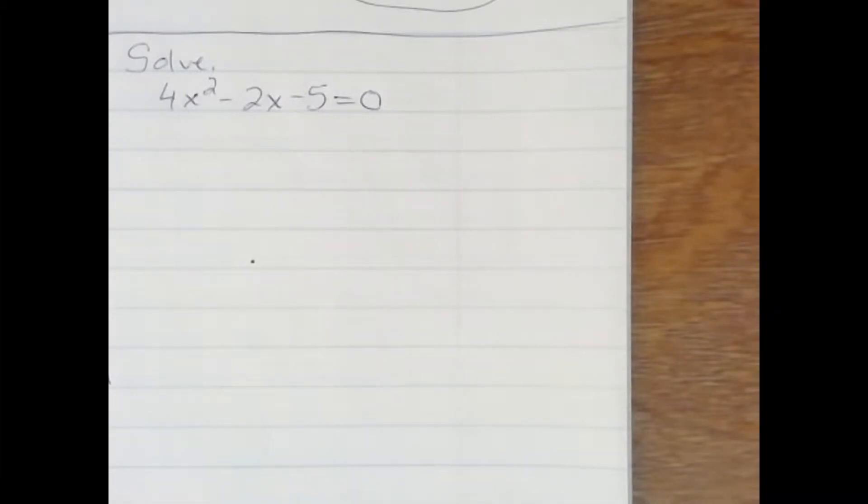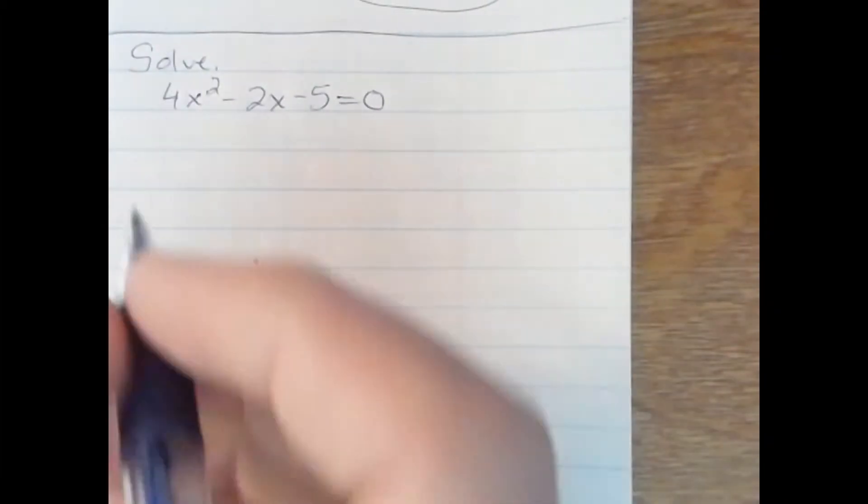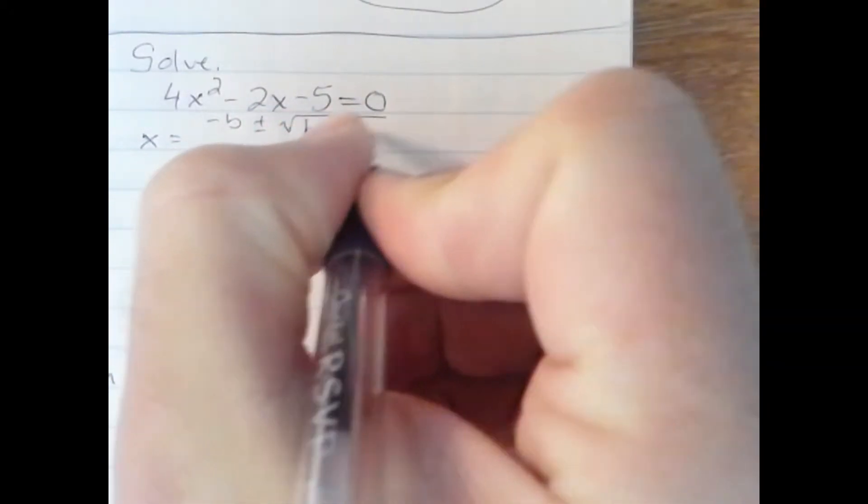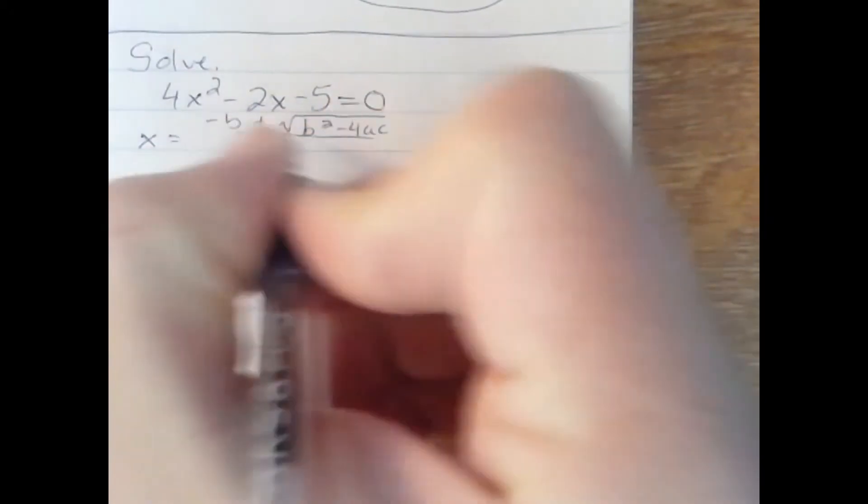Alright, we're going to solve this quadratic using the quadratic formula. The quadratic formula, if you remember, is negative b plus or minus square root b squared minus 4 times a times c all over 2a.